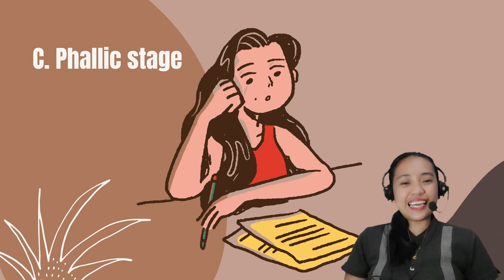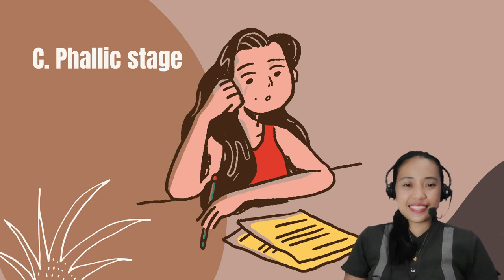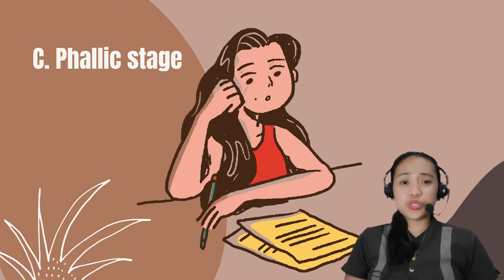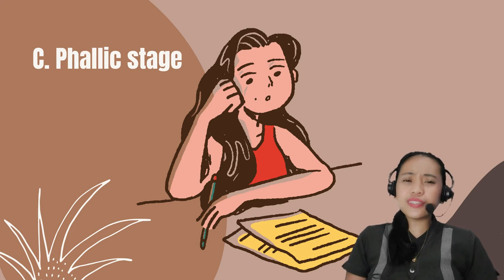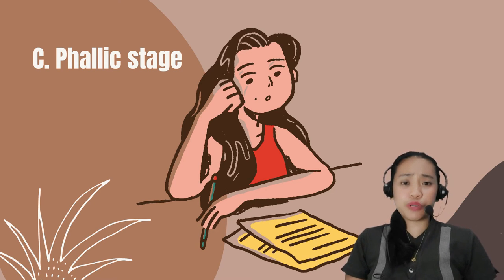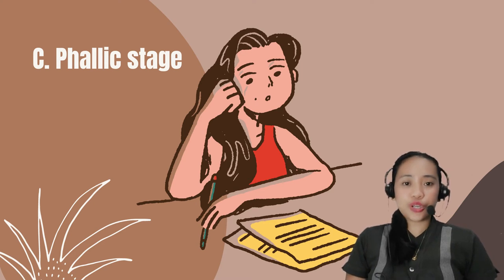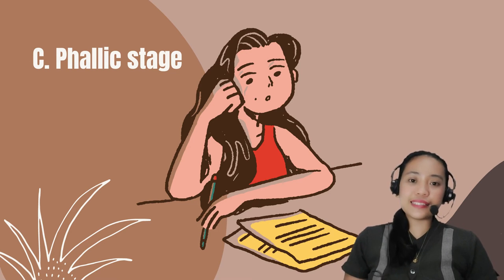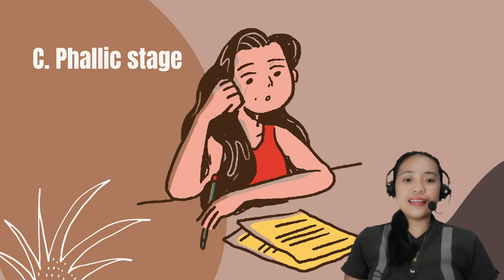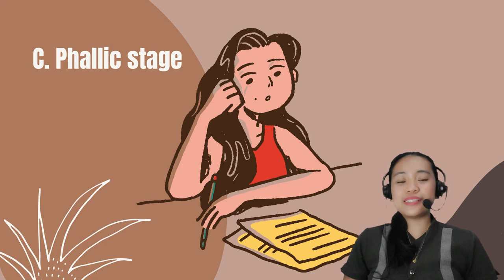The correct answer is Letter C. When a boy is closer to the mother — Oedipus Complex — and a girl is closer to her father — Electra Complex — these instances are under Freud's phallic stage in the psychosexual development theory.